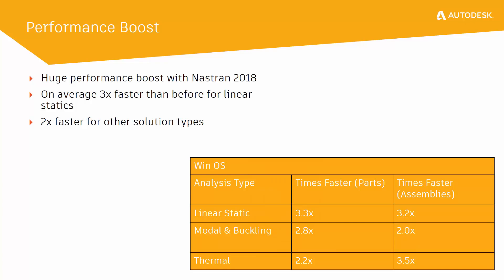The final enhancement we're going to look at today is the performance boost to analysis speed across the board. With the improvements made in Autodesk Nastran 2018, we are seeing linear analyses run three times faster on average, modal and buckling two times faster, and thermal analyses running between two and three times faster for parts and assemblies.